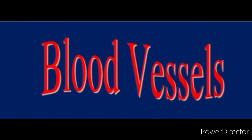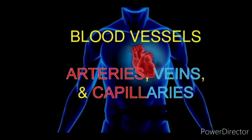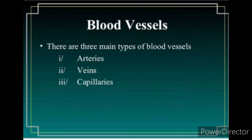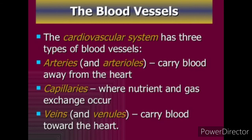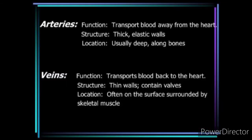Blood vessels are elastic muscular tubes which carry blood to different parts of the body. There are three kinds of blood vessels in humans: arteries, veins, and capillaries. I have explained these three types clearly in one of my previous videos called 'Human Circulatory System' — please go through that video.